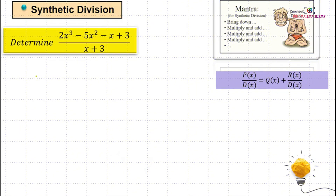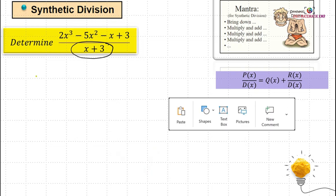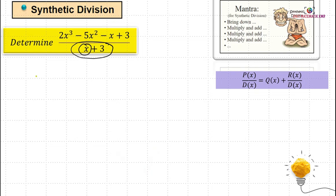Let's see the first example. We want to divide 2X³ minus 5X² minus X plus 3 using Synthetic Division. Firstly, let's check — we are given a divisor that is a linear factor and the coefficient of X is 1. So we can proceed to use Synthetic Division.